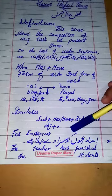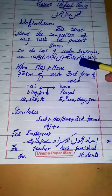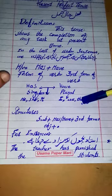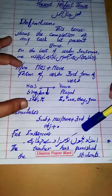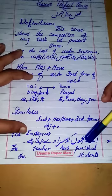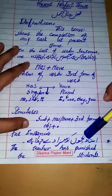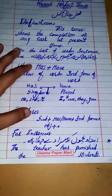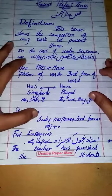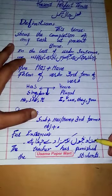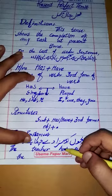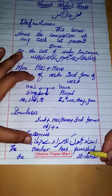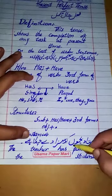'Ustad bacho ko seza de chuka hai' — the teacher has punished the students. First we identify the subject: 'ustad' means the teacher. The teacher is singular, so we use 'has.' Punish is the first form; the third form is 'punished.' So: 'The teacher has punished the students.' We say 'students' because they are in school, not 'children.'